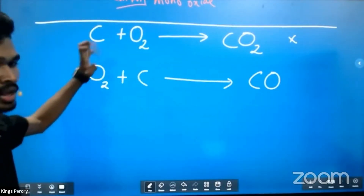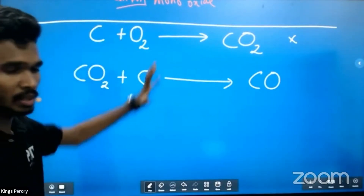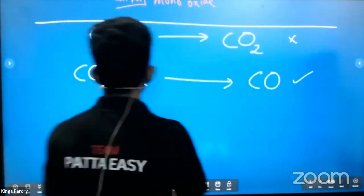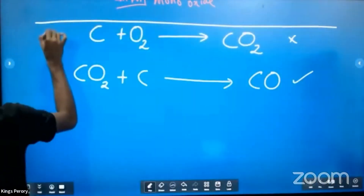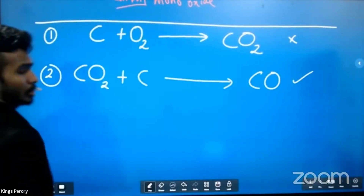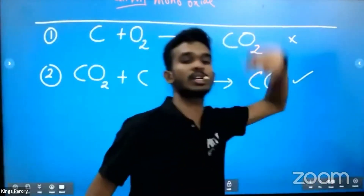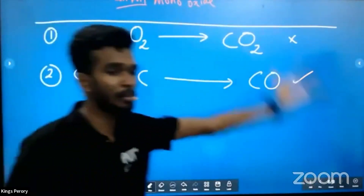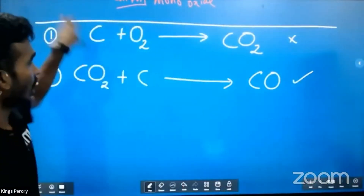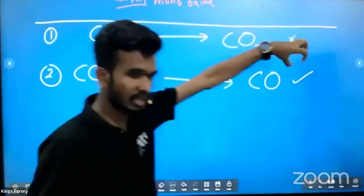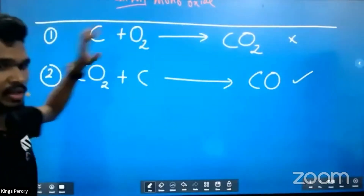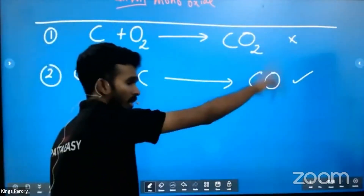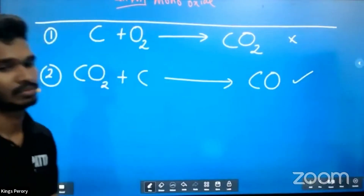Two steps to produce carbon monoxide. Step one: carbon plus oxygen gives carbon dioxide. Step two: carbon dioxide plus carbon gives carbon monoxide. Our psycho killer — carbon monoxide — is ready.